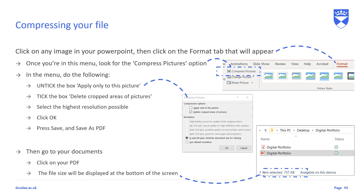Compressing your file size is very easy to do, and I'm going to show you how to do it in Microsoft PowerPoint. Click on any image, then click on the Format tab that appears at the top. Once in the Format menu, look for the Compress Pictures option. Untick the box 'Apply only to this picture', tick the box 'Delete cropped areas of pictures', select the highest resolution possible, click OK, then save your PowerPoint and save as a PDF. To check the new size, click on the PDF file and the file size will be displayed at the bottom of the screen. You may need to do this a couple of times to get the file size below 50 megabytes.